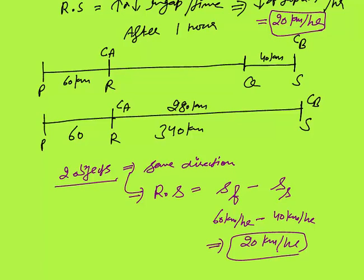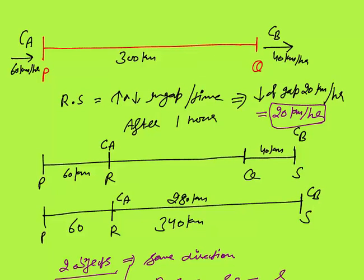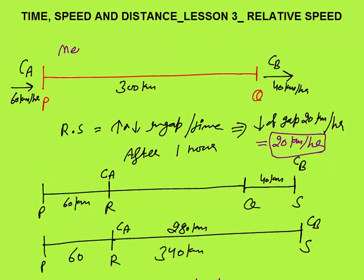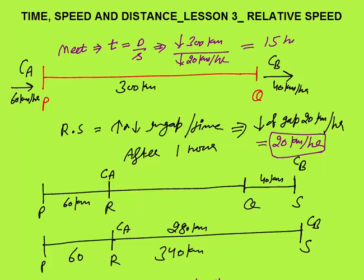We won't use a 'slower minus faster' negative speed — displacement physics kind of concept will not be used here. It simply means speed of faster minus speed of slower, which is 20 km per hour. You must know the concept of increase or decrease in gap per unit time — both methods to calculate relative speed. When will these two cars meet? Meeting means when the gap becomes 0. The gap is 300 km; after meeting, the gap will become 0. Time = distance divided by relative speed. The gap is reducing at 20 km per hour, so these two cars will meet in 15 hours after starting.